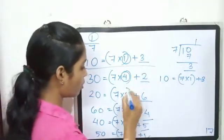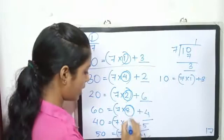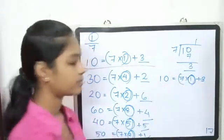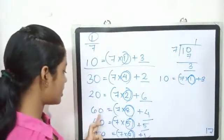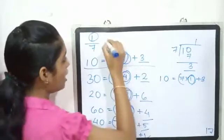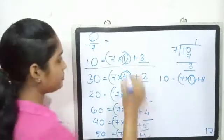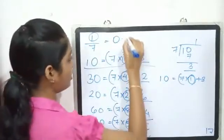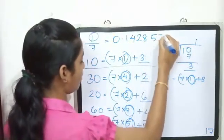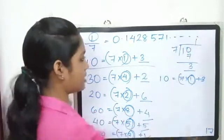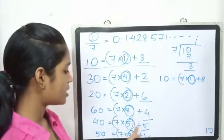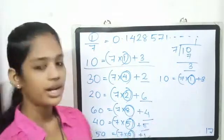The digits are 1, 4, 2, 8, 5, 7, 1. So 1 by 7 equals 0.142857, repeating.